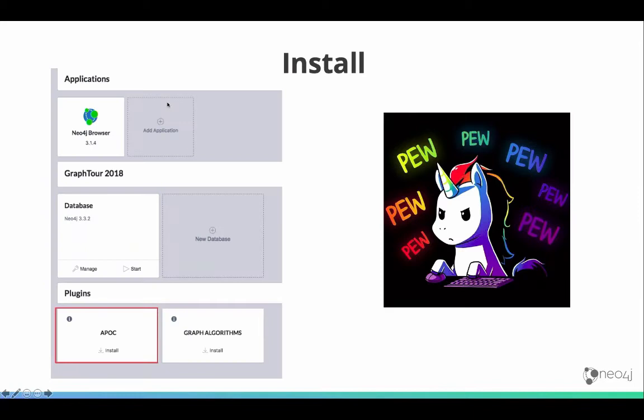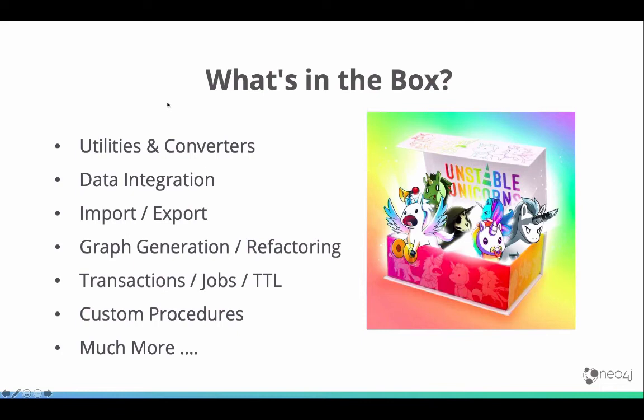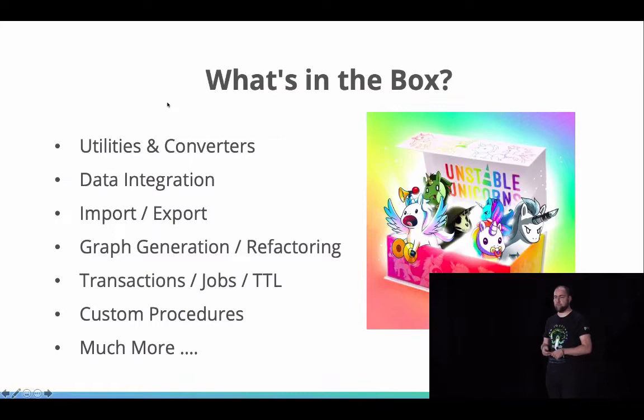Here you can see how to install it in Neo4j Desktop — you create a graph, click the install button, or if you have a graph you can click the manage button and manage plugins to install APOC. What's in the box of APOC covers a lot: utility converters, data integration, graph refactorings, data import, data export, and special functions like triggers and time-to-live functionality. We also added custom procedures. I won't be able to cover all of it, but you'll find lots of details in the documentation.